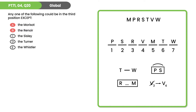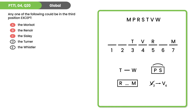Testing T in third: V still goes fourth, R and M go to five and seven, W slides into six after T, and P and S go into one and two — that works, so T could go third. So it must be E, W, that can't go third. Putting W third forces V into fourth, R and M into five and seven, and P and S consecutively into one and two, but that forces T into sixth — after W — breaking the first rule. So W cannot go third.